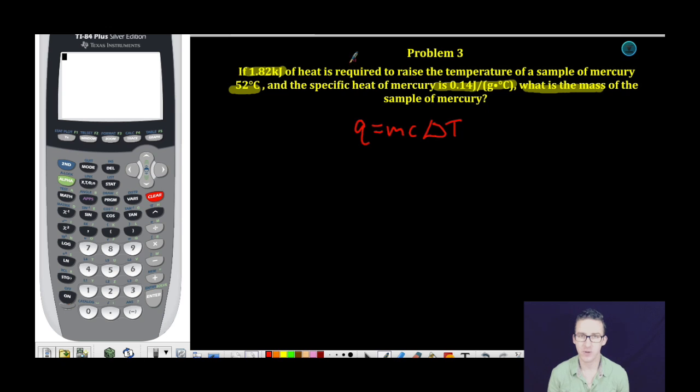Something to watch out for here is that the heat value is given in kilojoules. So I'm going to convert kilojoules to joules by multiplying by 1,000. The reason I need to convert to joules is because my specific heat is in joules per gram degree Celsius.